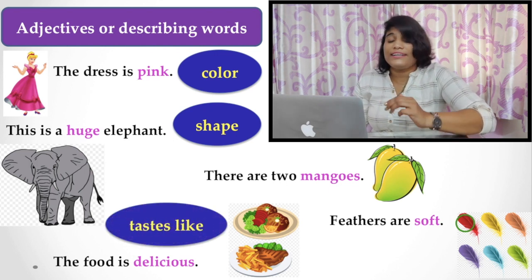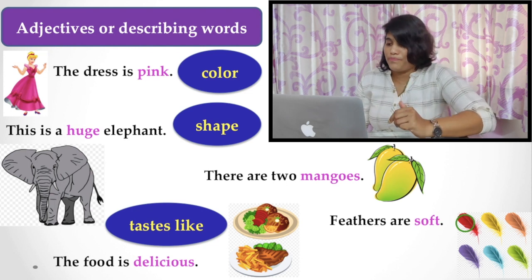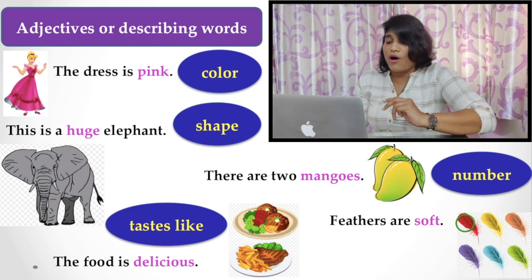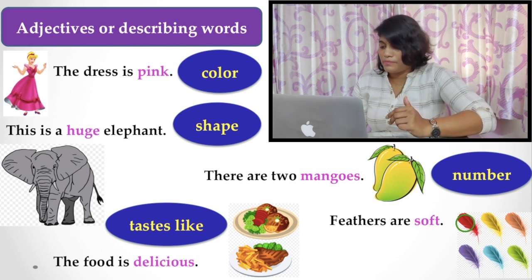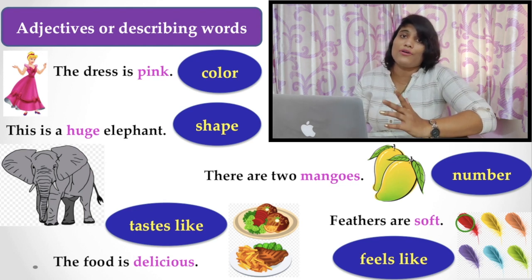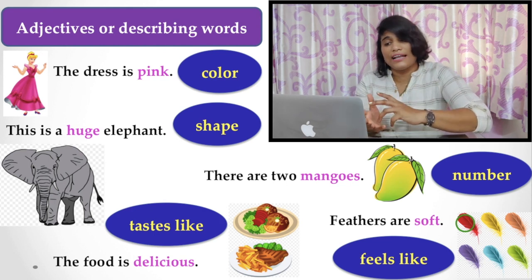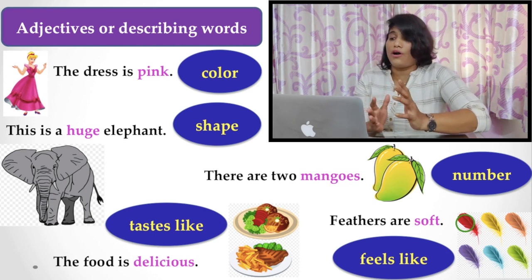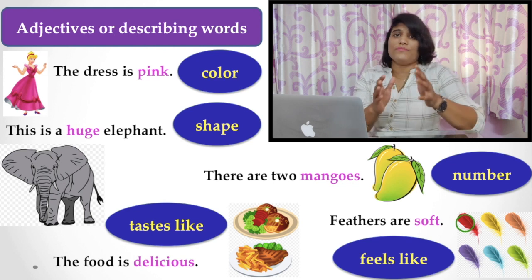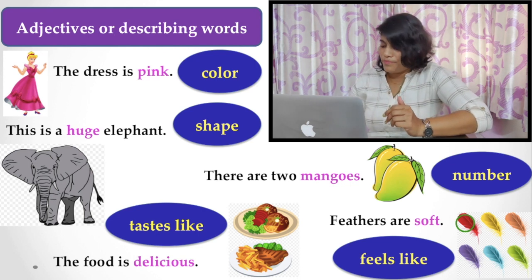Similarly, the food is delicious. Taste - how is the food? That is delicious, describes the quality of the food. Now there are two mangoes, describes the number of how many mangoes are there. And feathers are soft, that is feel like, how you feel. So all these words that describe the noun - which color, shape, taste like, or feel like, or number - the words describing the quality of that noun. So an adjective is a describing word that describes a noun.